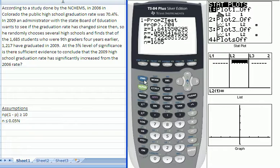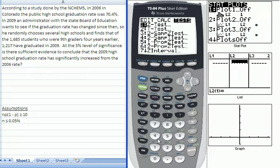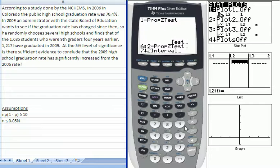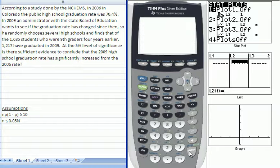The last thing I'll show you is back in the test function. I'm going to go back over to the test submenu and choose 1-prop-z-test again. And then I'm going to arrow down to the draw menu to show you what the test looks like. You'll want to make sure that your stat plots are all turned off and that your y equals menu is off also.